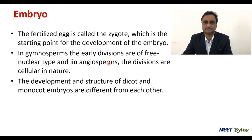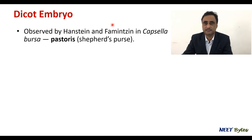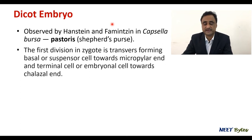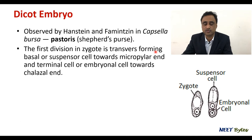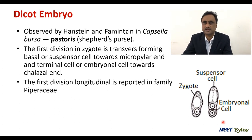First, let's talk about the dicot embryo, which was observed in shepherd's purse — Capsella bursa-pastoris. Here, the first division in the zygote is transverse, forming a two-cell stage: a suspensor cell and an embryonal cell. The suspensor cell is formed towards the micropyle and the embryonal cell towards the chalaza. There are a few cases where the first division is longitudinal, found only in the family Piperaceae, but normally the first division is always transverse.